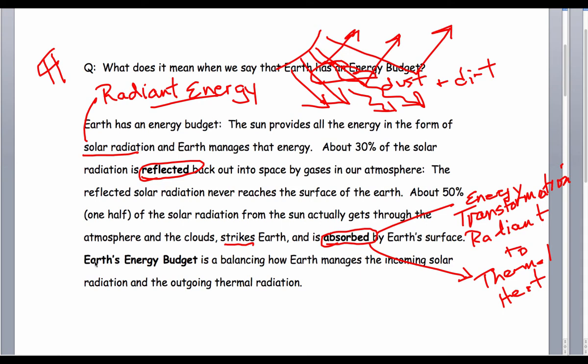So, Earth's energy budget now, here's another key term, is a balancing of how Earth manages the incoming solar radiation with the outgoing thermal radiation.